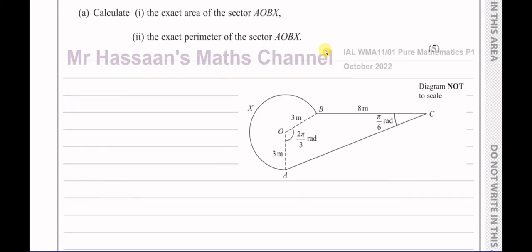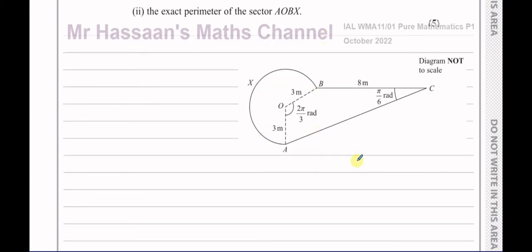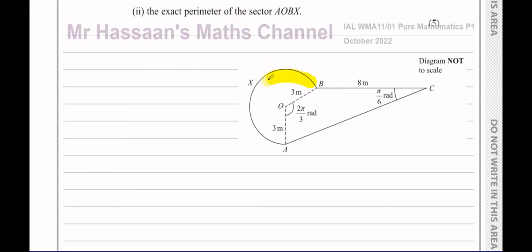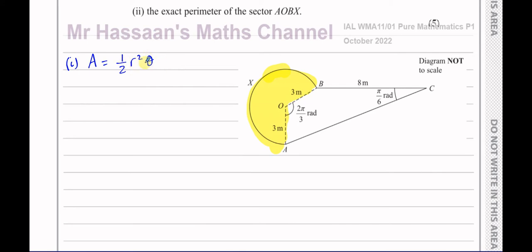We need to calculate first the exact area of the sector AOBX and the exact perimeter of the sector AOBX. So all the measurements we need are on this diagram, and we're only dealing with this sector here — not the quadrilateral, just the sector.